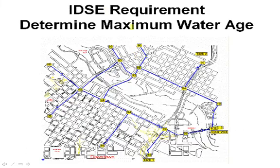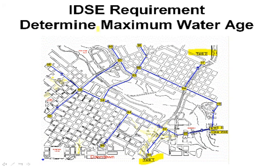Another analysis you can do is water age, which we need to do because of the EPA Stage 2 requirements. This shows the maximum water age in the system due to residence time in the tanks. In this particular system, the water age averages around 90 to 95 hours, except near the pump station where fresh water comes in from the clear well. This is an easy analysis to set up if you have a model.